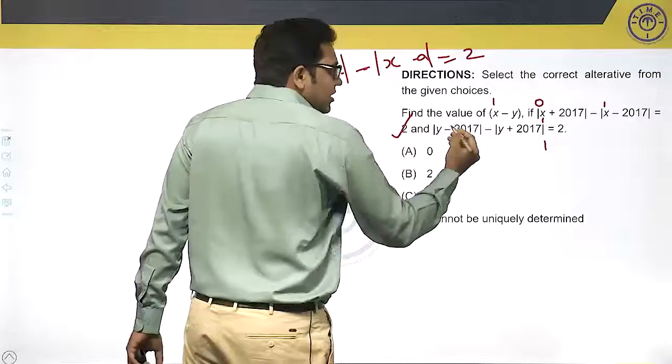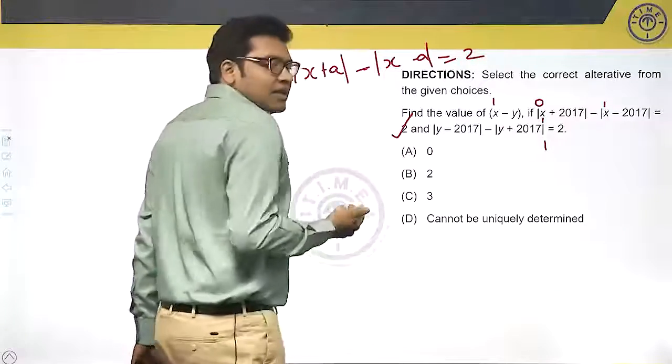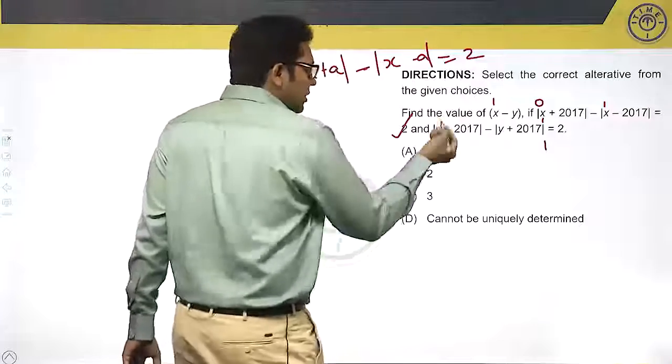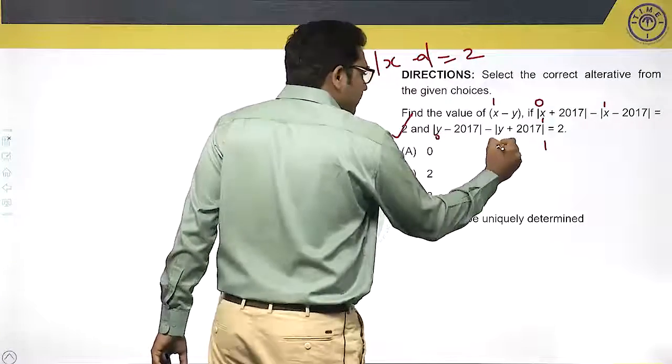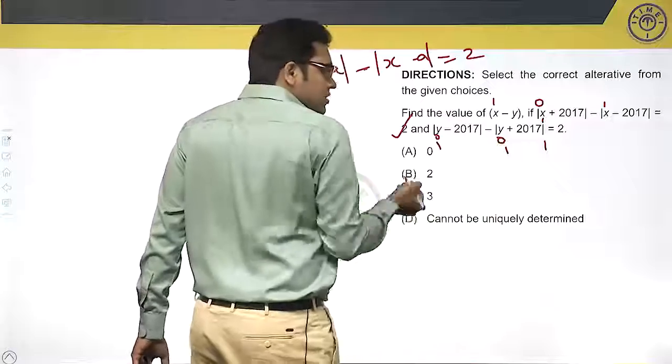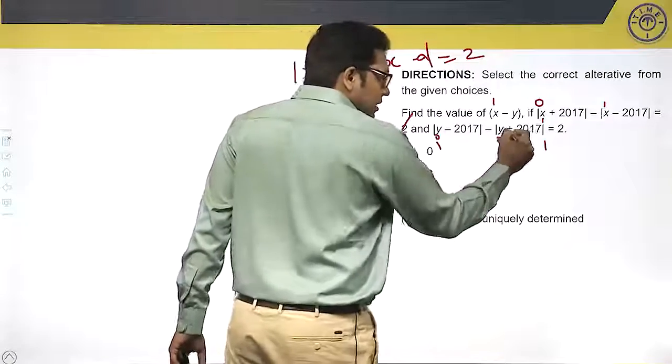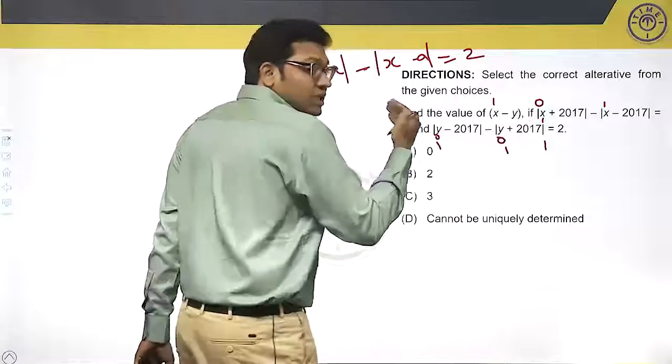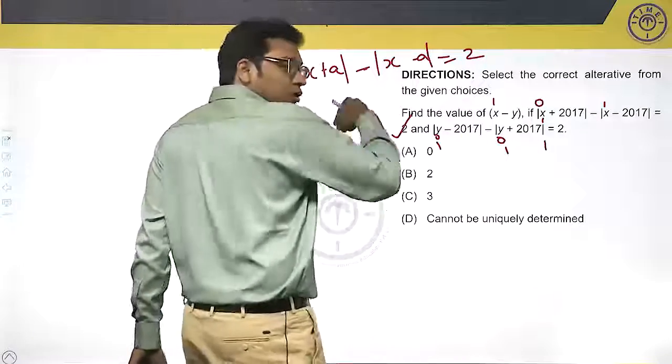Second equation: |y - 2017| - |y + 2017|. Same thing in reverse, a units to the right and a units to the left. When y is 0, the value is 0. When y is 1, we get -2. So when I increase y, the value decreases. I have to decrease y.